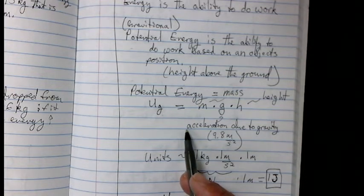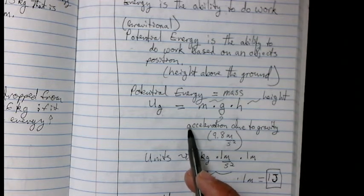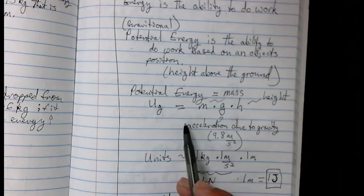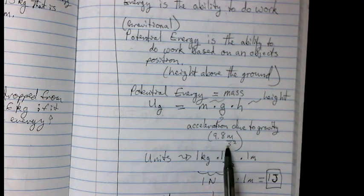When we talk about G, just remember it's an acceleration, so this is mass times acceleration, and that acceleration is 9.8 meters per second squared.